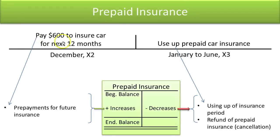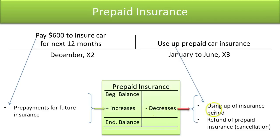Prepaid insurance works the same way. If you pay $600 now to insure a car for the next 12 months, it's an asset until the time expires. Each month, one-twelfth of the $600 is expensed and the asset decreases. Prepaid insurance increases as you prepay for the future and decreases as the insurance period expires or if you cancel your policy and receive a cash refund.